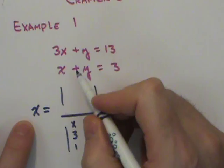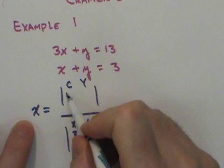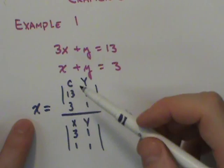Now when I solve for x, I want to put my c coefficients, the answers, in where the x is usually placed and then do the y coefficients again. In this case, I would say 13, 3, and then 1, 1.